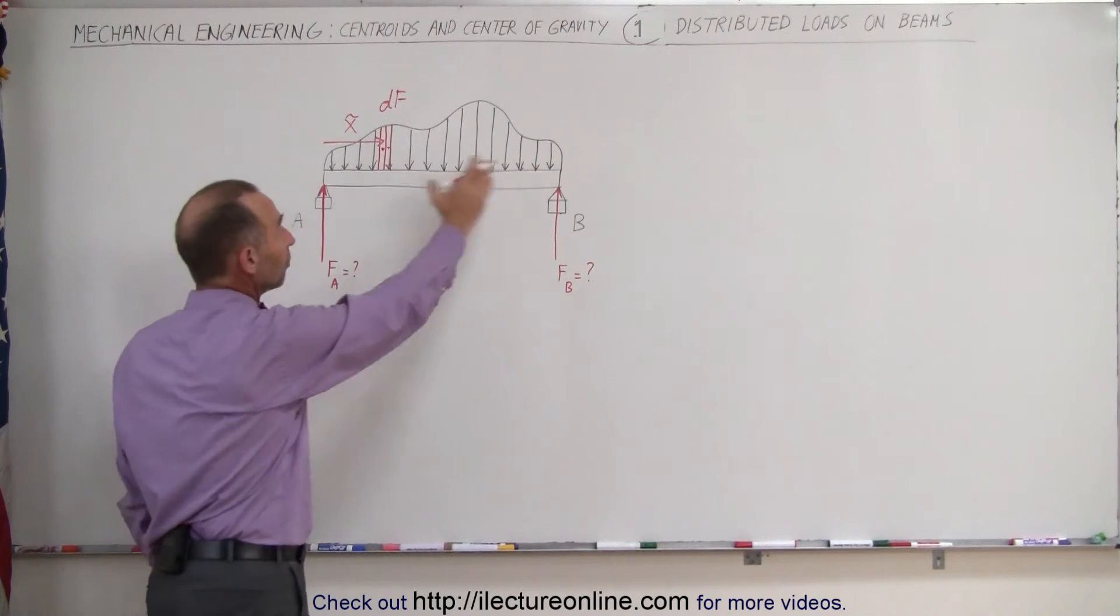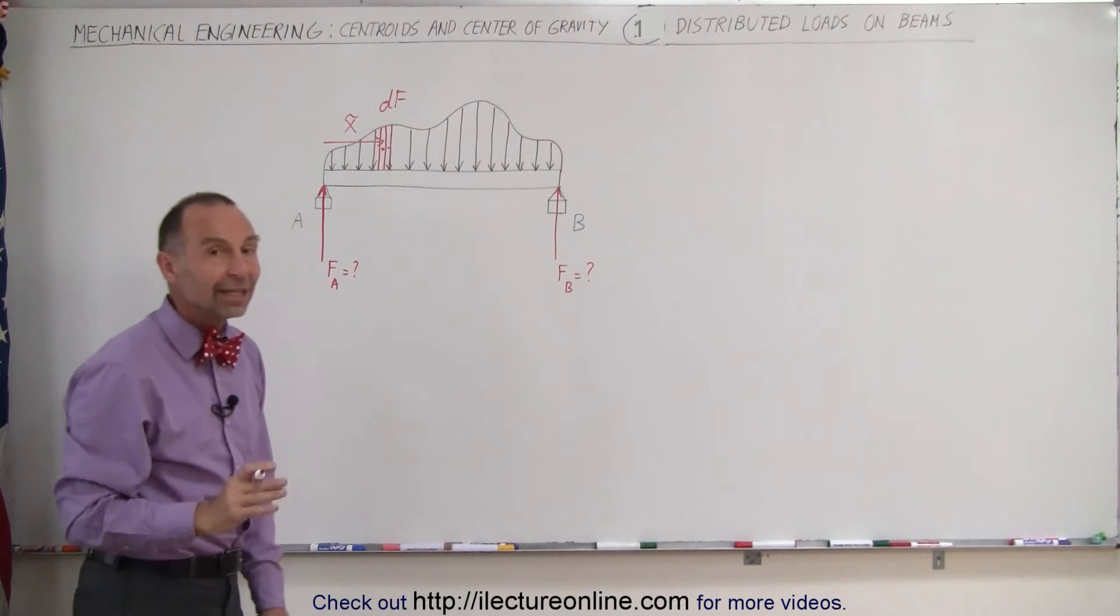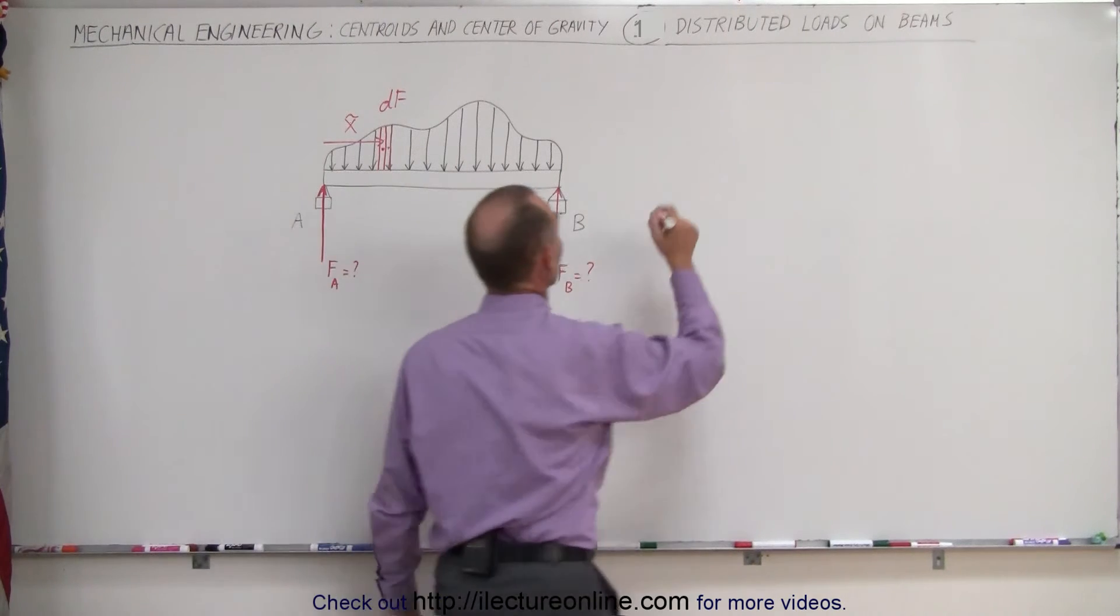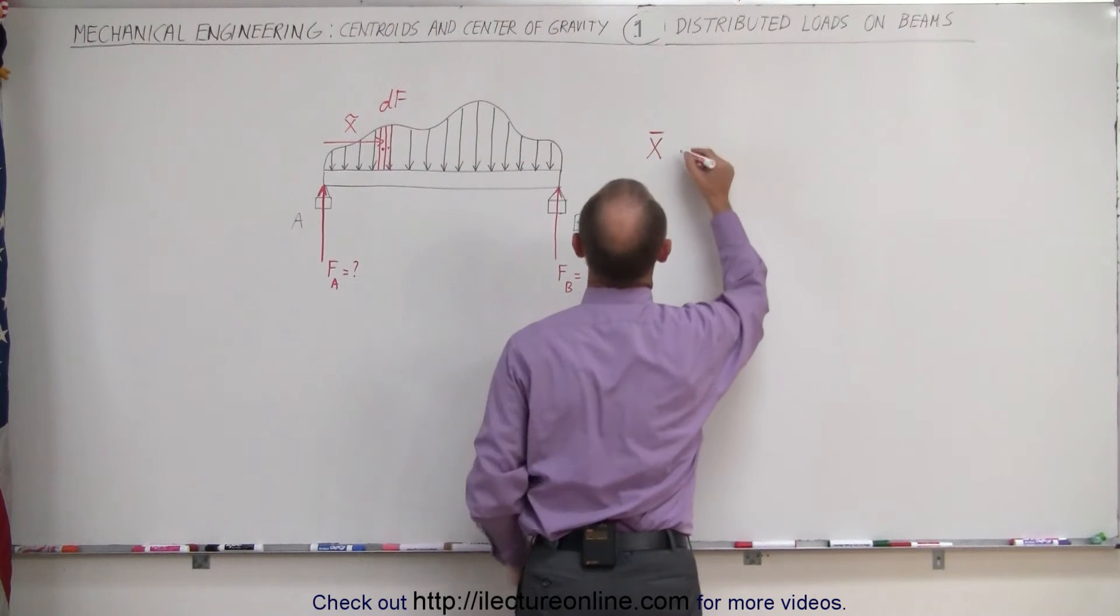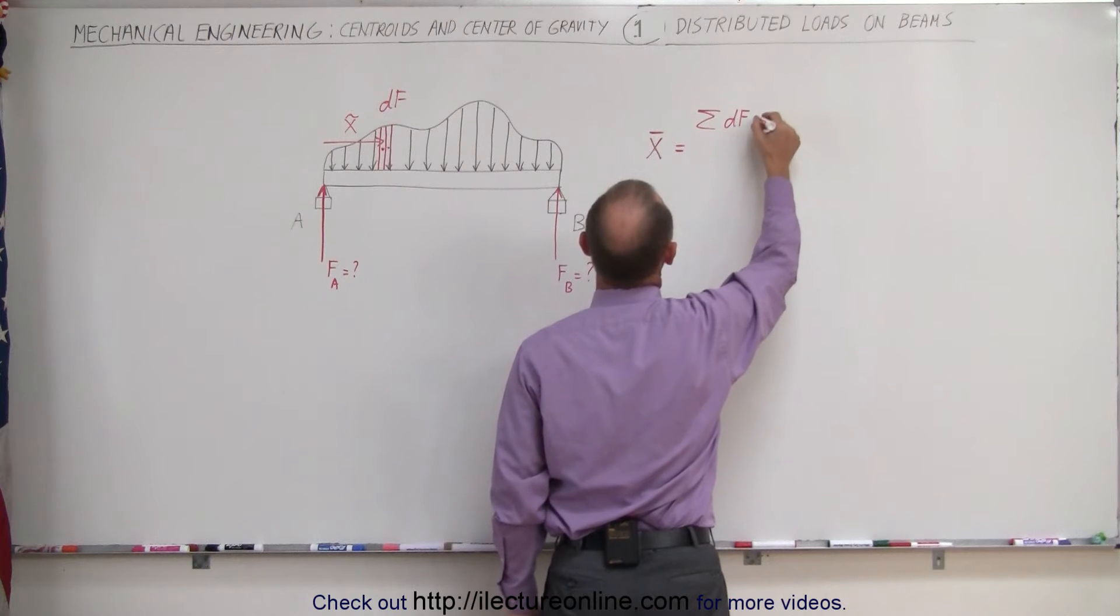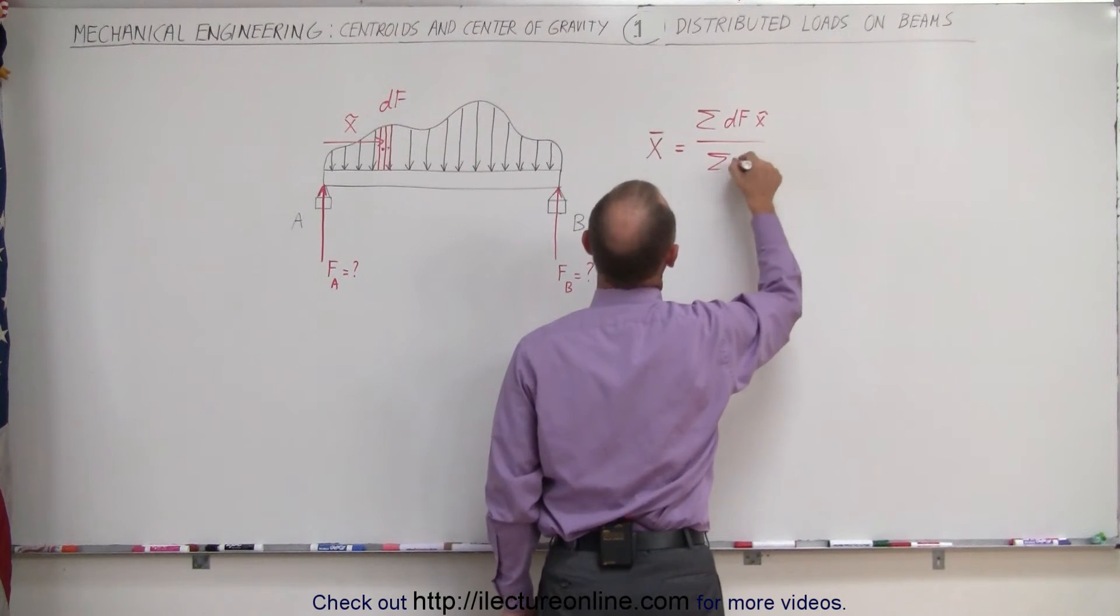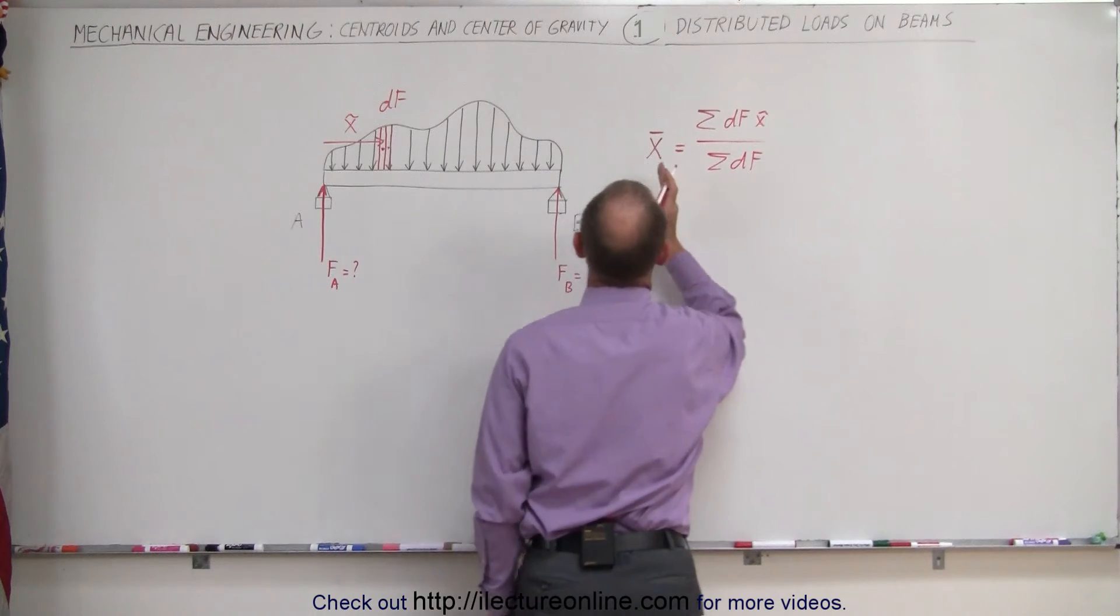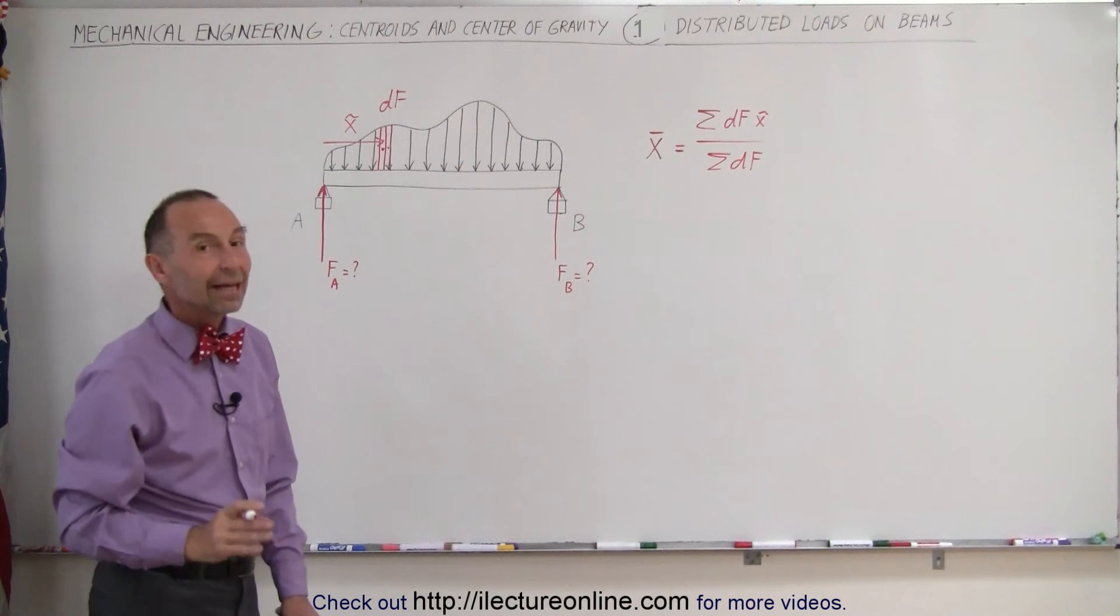If we add them all up for the whole beam and divide it by the total force acting on the beam, we can then actually find the centroid. So the concept here is that the centroid for all the forces combined is equal to the sum of all the small little forces, let's call them small little df's, times the centroid of each of the df's divided by the total sum of all the forces, and that gives us the location of the centroid where all the forces are acting on the beam.